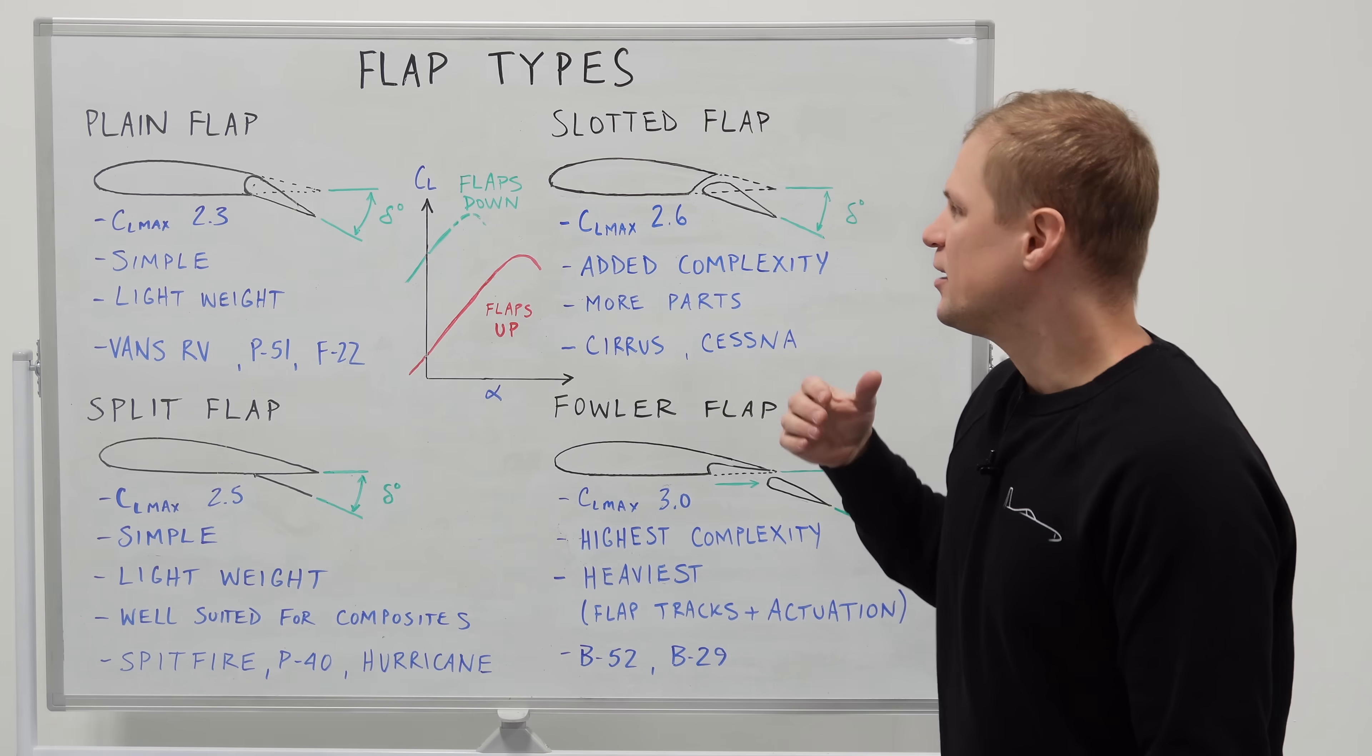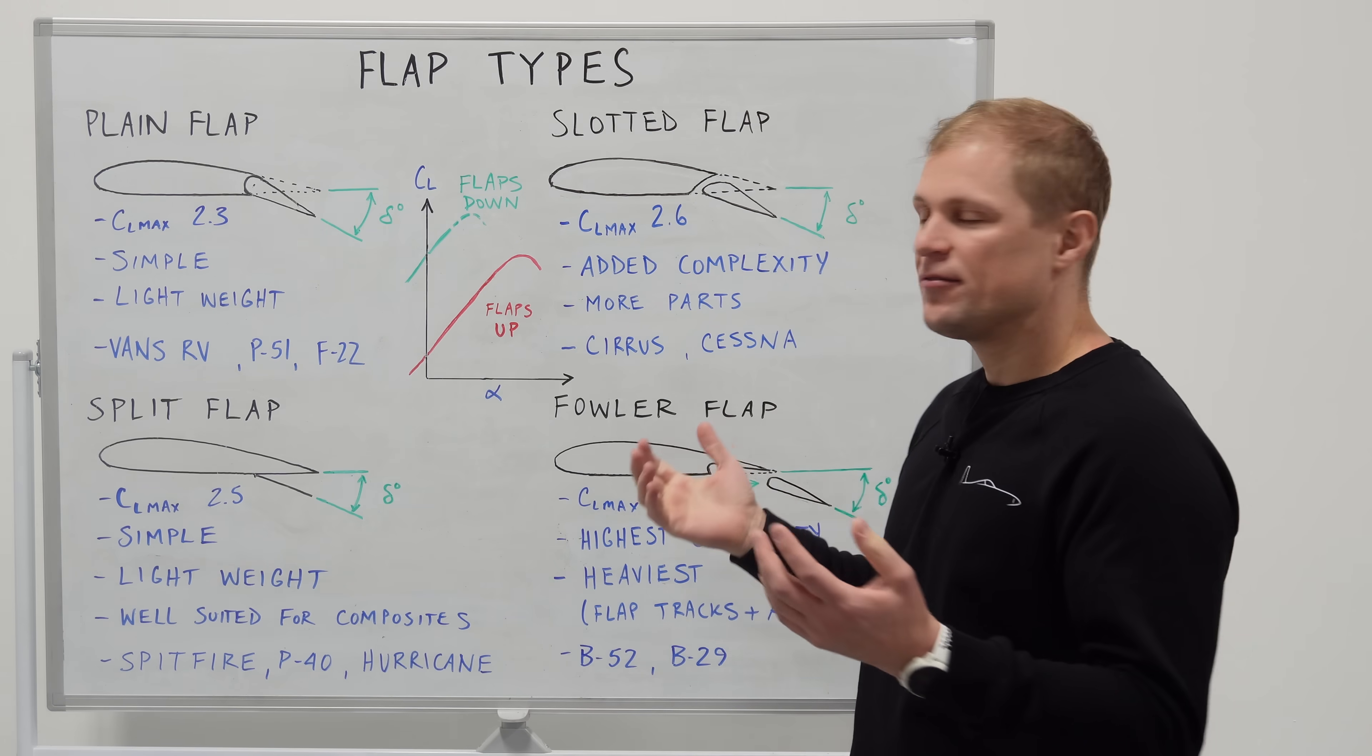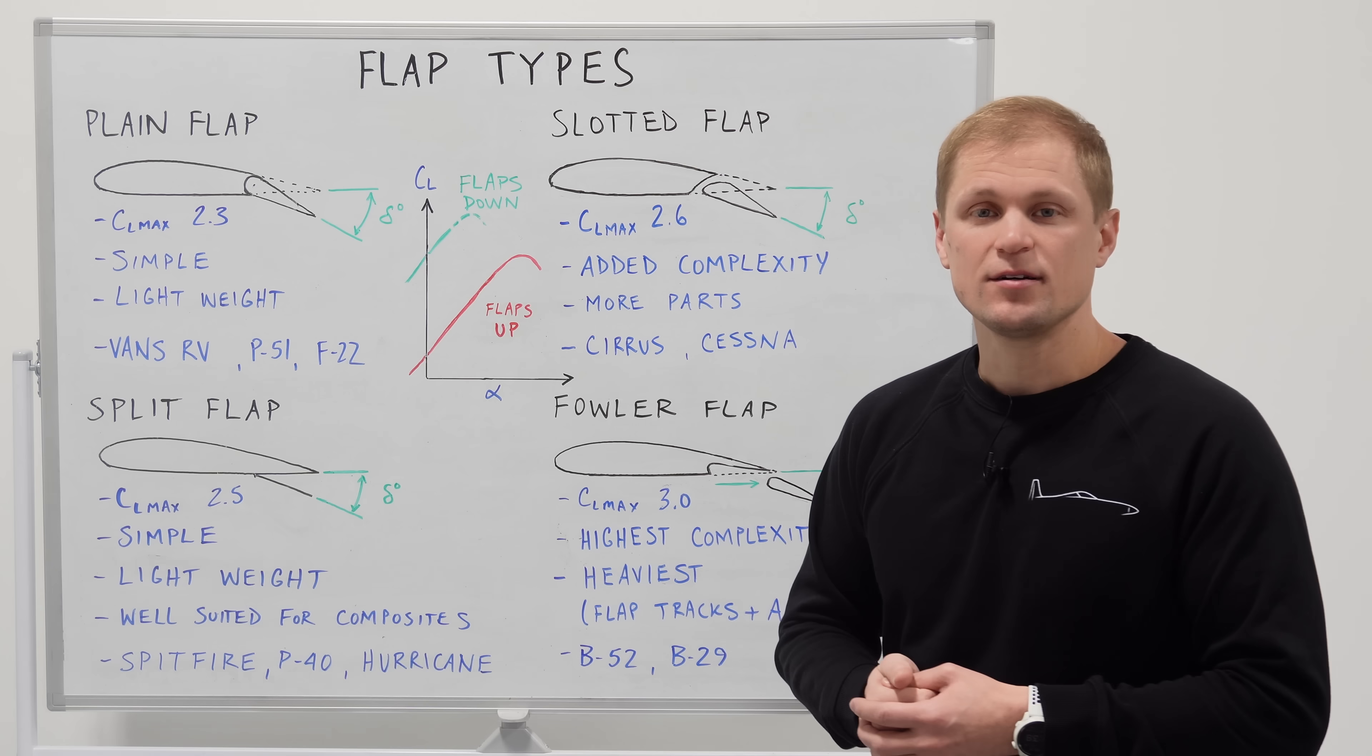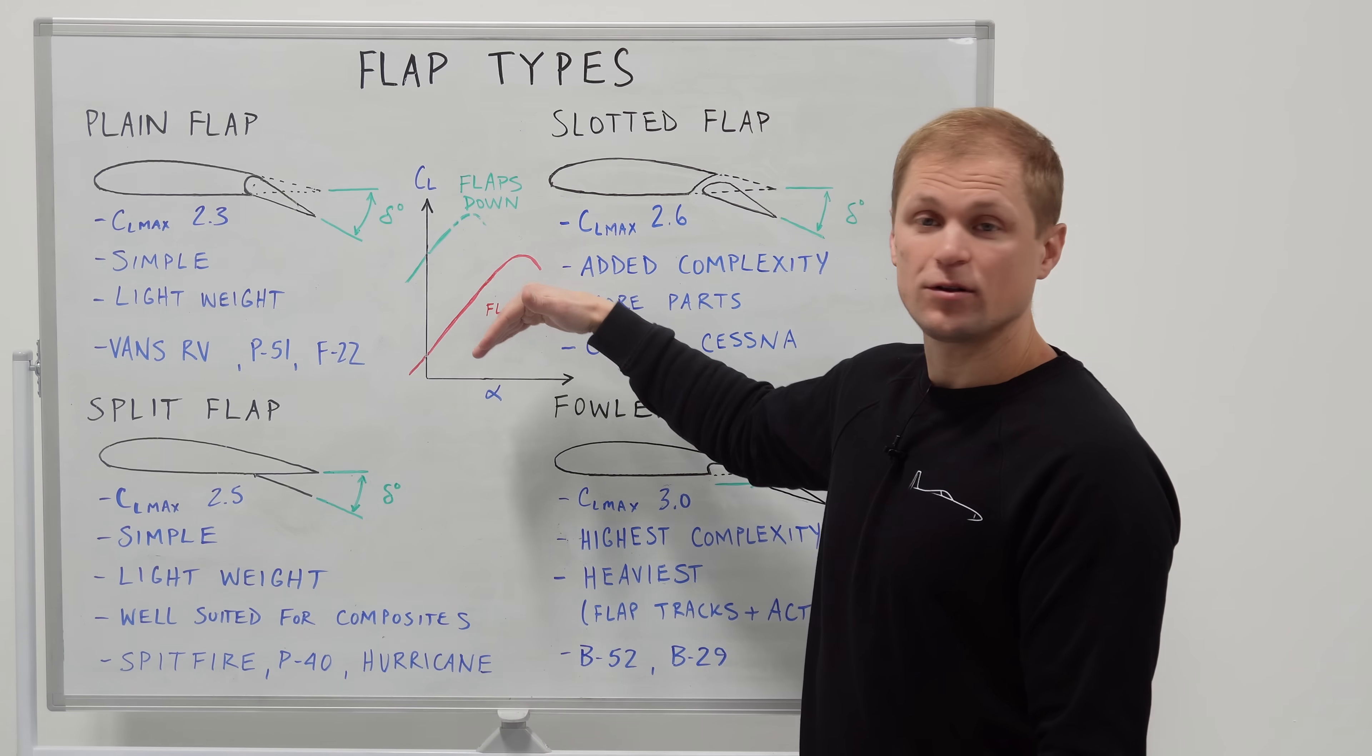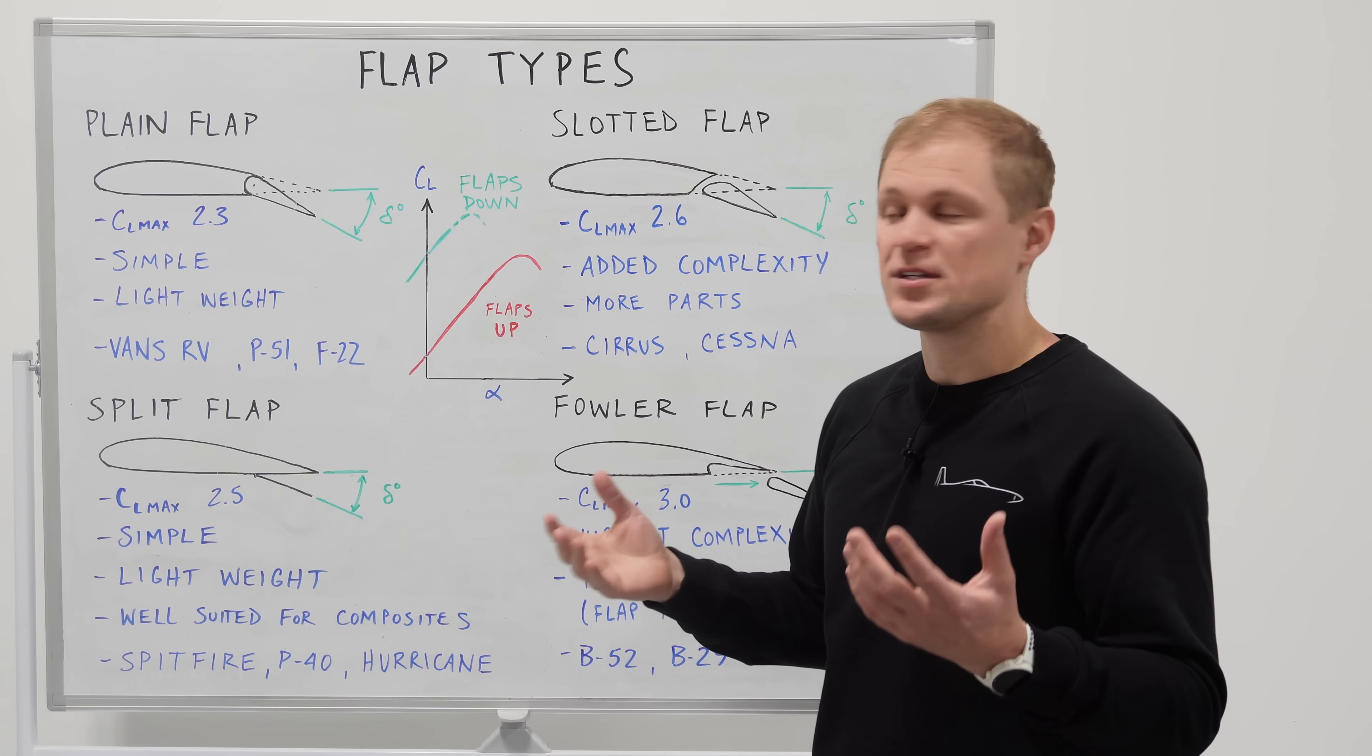So we'll start by looking at the plain flap that's characterized by having both the top and bottom skin moving together deflecting down as a unified control surface in the flap. And we can measure the performance of the plain flap by how much it increases our lift with the lift coefficient. We can measure the lift coefficient by running a little test wing through a wind tunnel and then measuring lift versus angle of attack. We'll get a lift polar that looks something like this and when we drop the flaps it'll move our lift curve up and to the left and it'll slightly modify the peak of the curve.